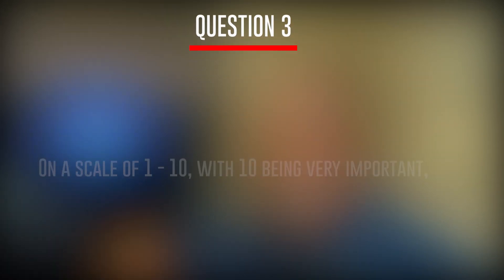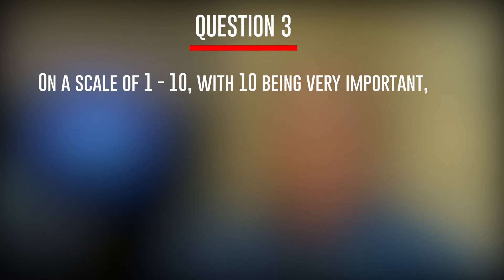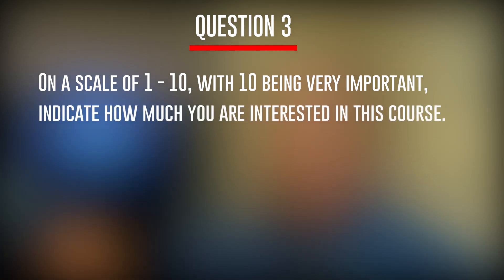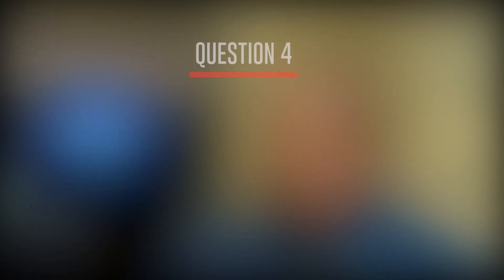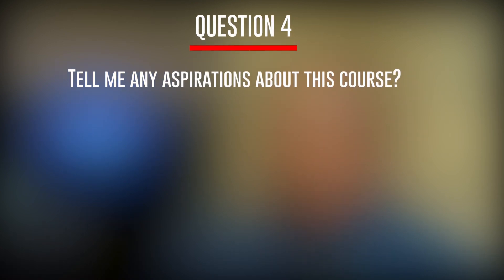Number three: on a scale of 1 to 10, with 10 being the most important, indicate how much you are interested in this course. Number four: tell me your aspirations about this course. Is there anything you are hoping to learn so I can add it to the objectives and the course outline?